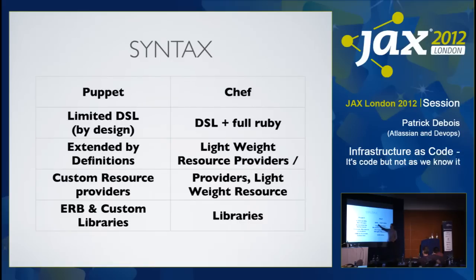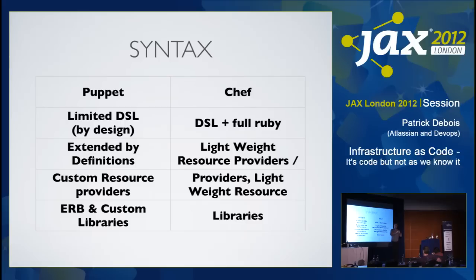Puppet has a limited DSL on purpose — an admin has a restrictive set and isn't supposed to go wild like in Perl. It's restricted to a minimal set of functions, so everyone using that language stays on the same page. It has power, but also downsides because it doesn't drive people to combine things in a define or make more complex things.